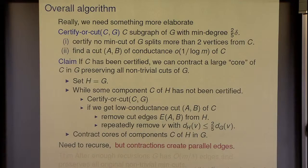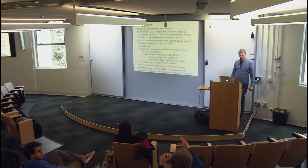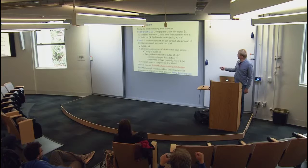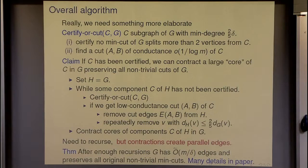So we have this process: we find all edges potentially relevant for non-trivial min-cuts and don't touch them, then contract the rest. We know that's the vast majority of edges. Then we recurse — but contracting creates parallel edges, and everything I've said doesn't work in general. It turns out you don't create too many parallel edges, and things still work out. After enough recursions, the analysis shows you get down to m divided by delta edges.